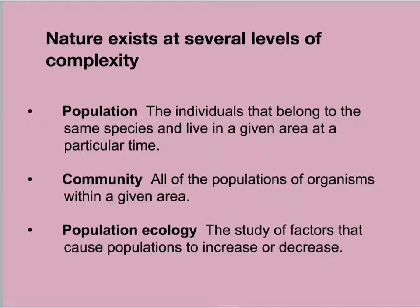The second level of complexity is what we call a population. A population is composed of all the individuals that belong to the exact same species and live in a given area at a particular time. Evolution occurs at the level of a population. The boundaries of a population are rarely clear and may be set arbitrarily by scientists — we might study the entire population of white-tailed deer in North America, or focus on a single community in Red Top Mountain National Forest.